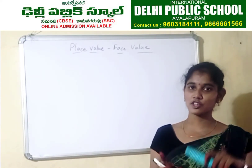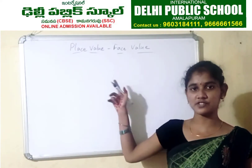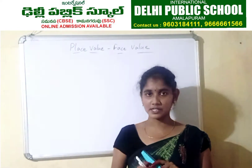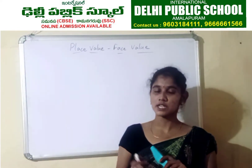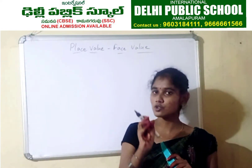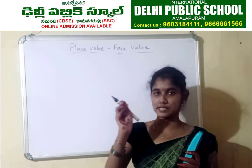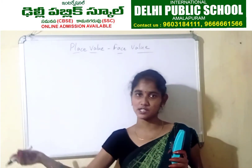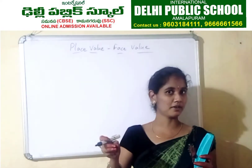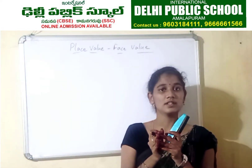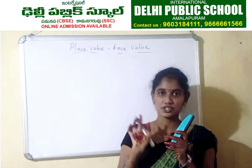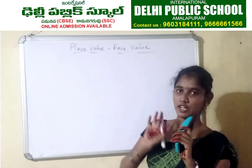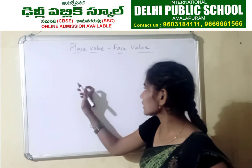Hi students, we are in the concept of place value and face value. So what is a place value? Place value means when a digit goes into a place — for example, the 1's place, 10's place, or 100's place — it will get power and the value of the number will be changed. And the face value never changes.